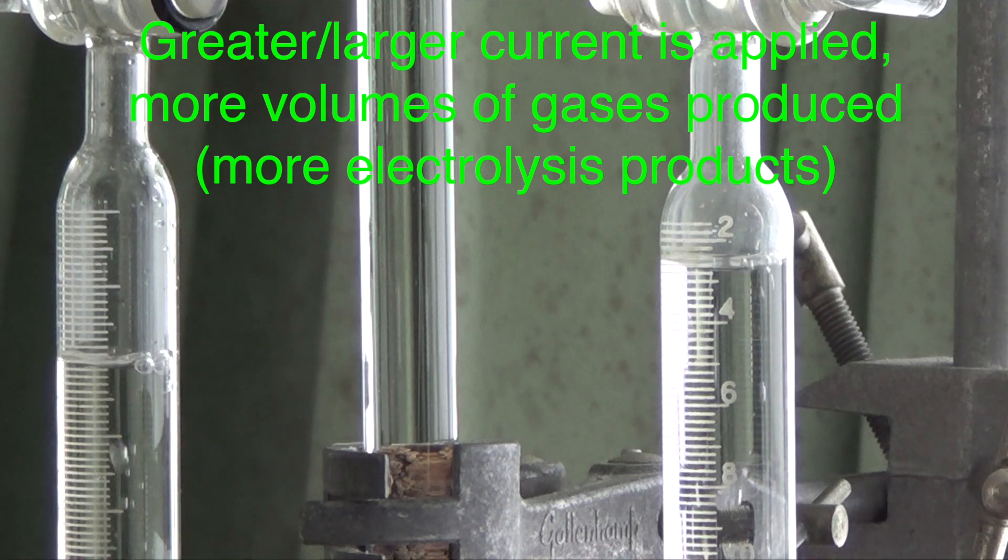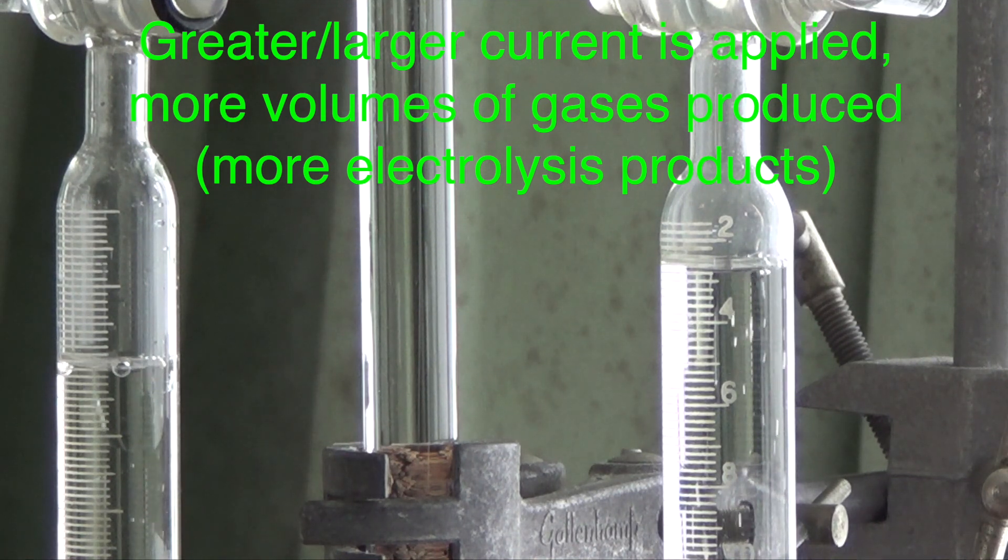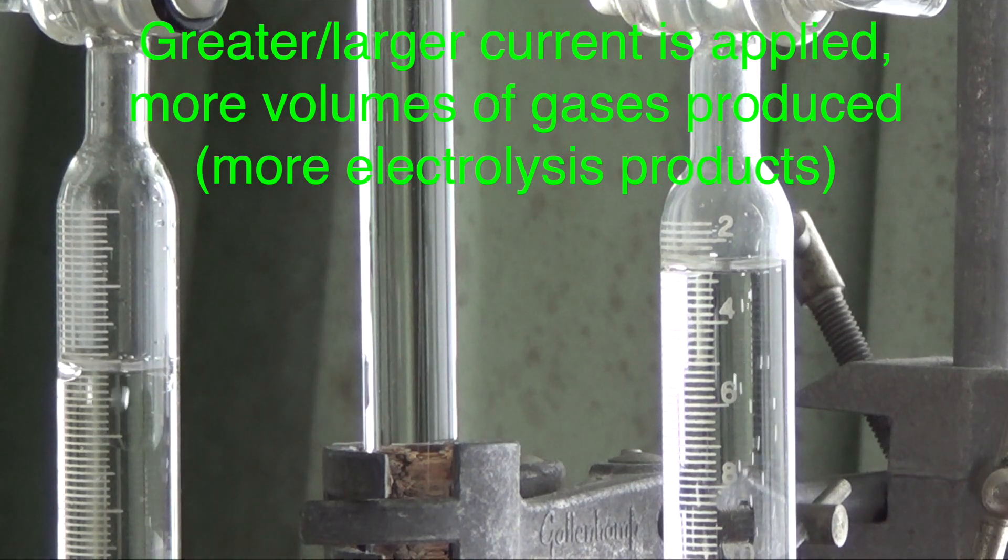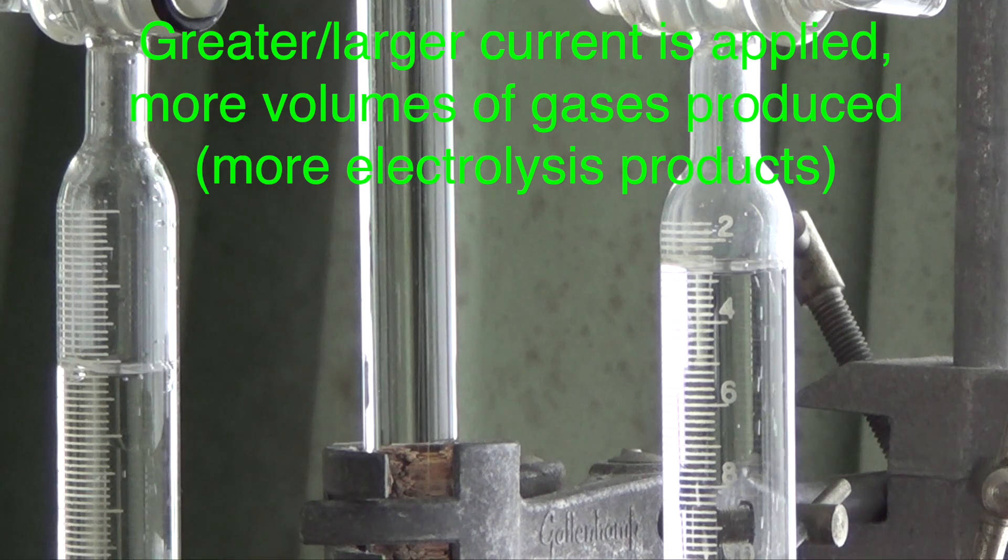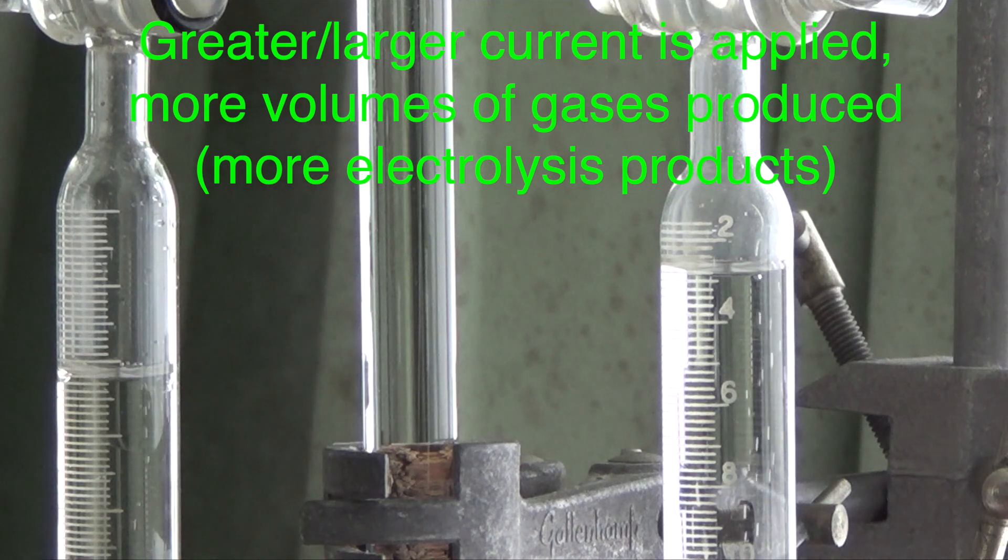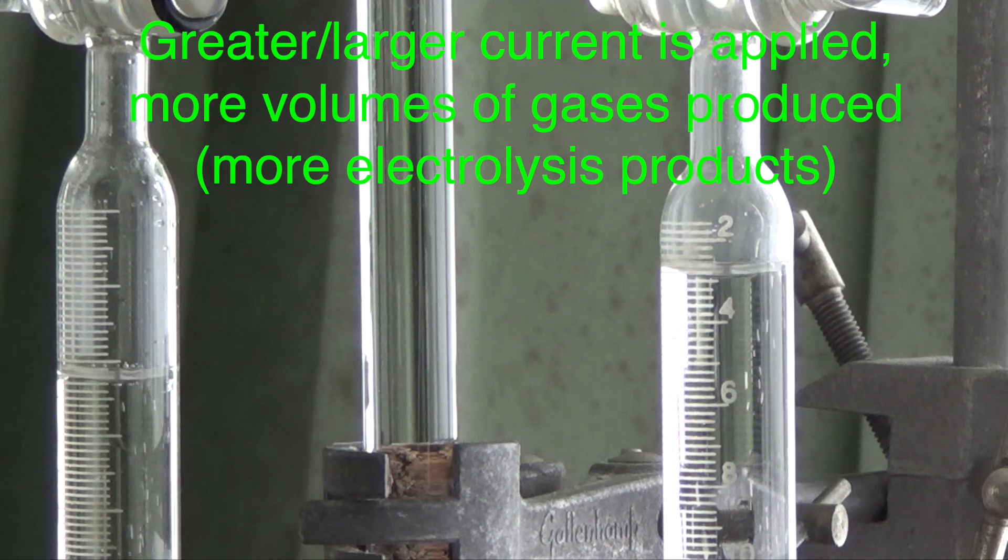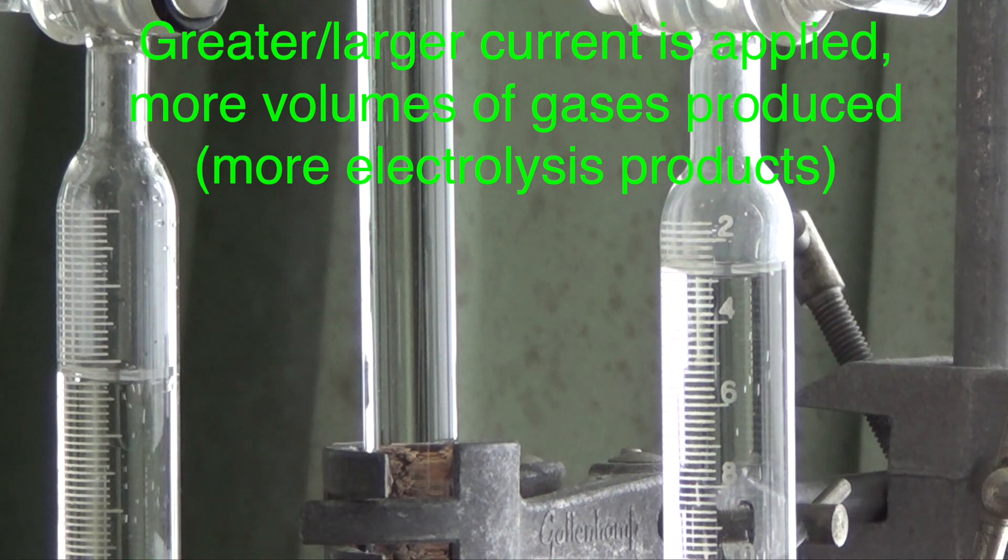So this is the current decreased by a little bit. It's getting a bit slower because lesser current means lesser charge, lesser charge passing through, therefore lesser electrolysis. I'm just going to decrease it a notch further. This is current being decreased a notch further and it's getting even slower. So how much product you get over time depends on how much current actually passes through. I'm going to decrease the current even further and you can see it's much slower.